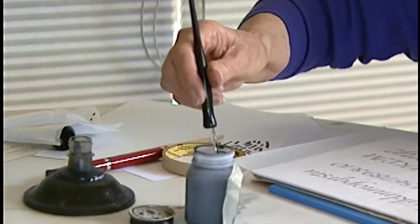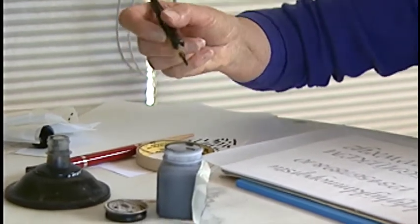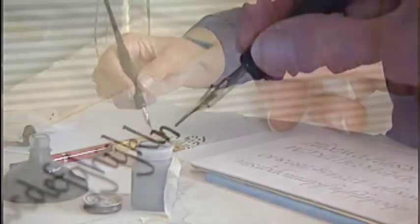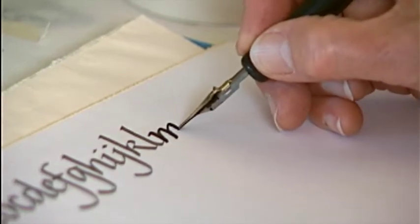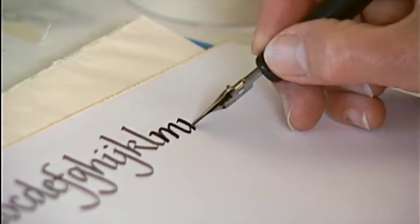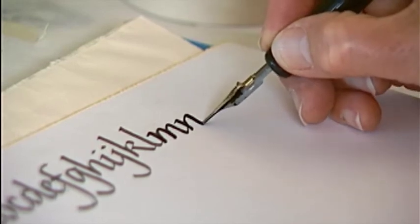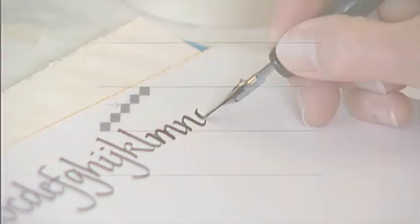Ink flow is important in creating a smooth letter. If you're using an ink well, you don't need to dip the pen for each letter. You should be able to do a group of letters before the pen runs dry. The four lines are the ascender line, the waistline, the baseline, and the descender line.